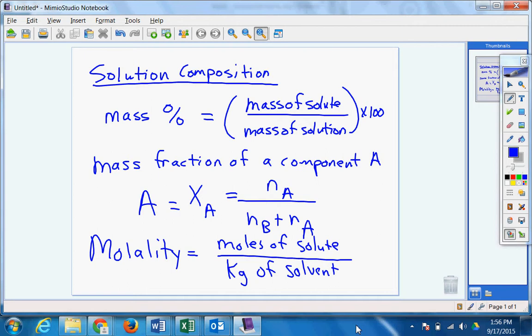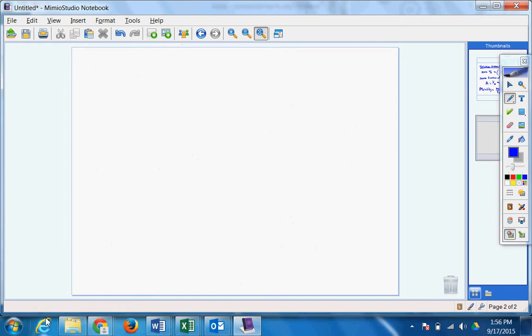All right. Real quick, let's go over a couple examples that I have listed for you. So some various types of solutions. So let's see if we can figure out what these are. Let's say I have air and natural gas.